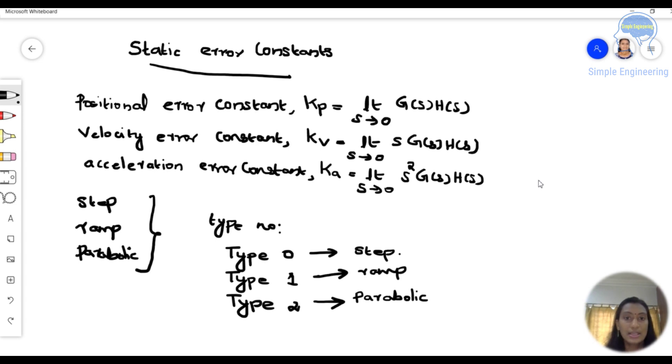That static error constant means it is Kp, Kv and Ka.